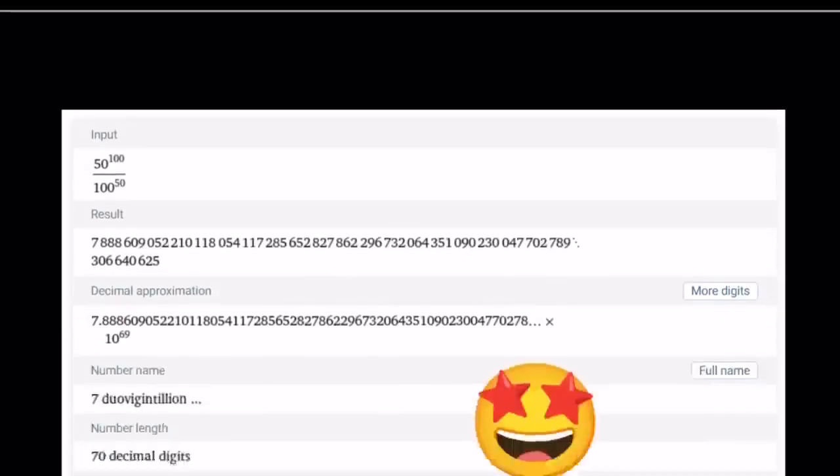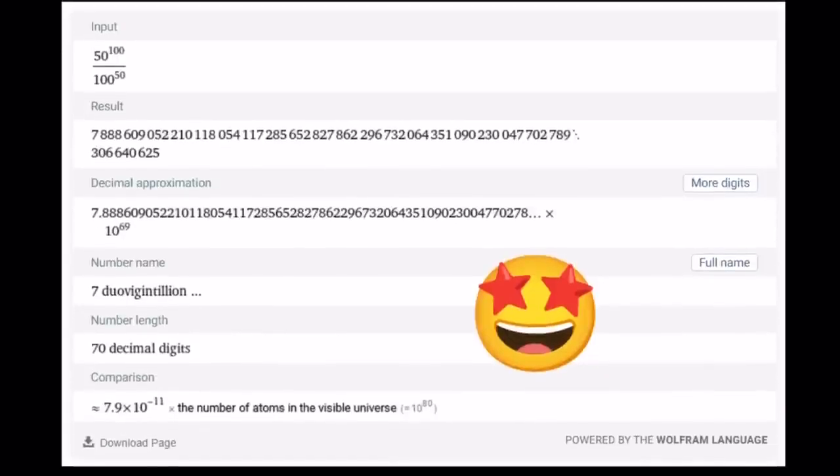Let's take a look at the numerical value. And you're like, wow, this is crazy. So a couple facts. The result is that number that you see right there. I'm not going to read it, but the decimal approximation tells you that this is a 70-digit number. So it has 70 digits, 7.888 something times 10 to the power 69. And you can start reading it as 7 duovigintillion, blah blah blah. And it has 70 decimal digits, as you can see. As a good comparison, 7.9 times 10 to the power negative 11 times the number of atoms in the visible universe. So think about all the number of atoms in the whole universe, and you multiply it by this super small number. Then you'll get the number you're looking for. Let's proceed with the solutions.